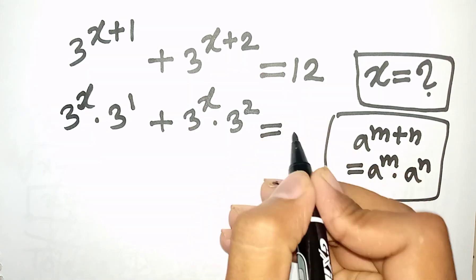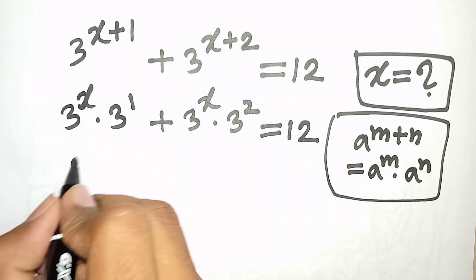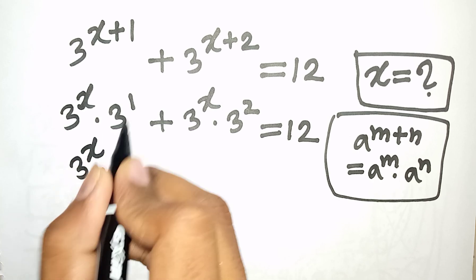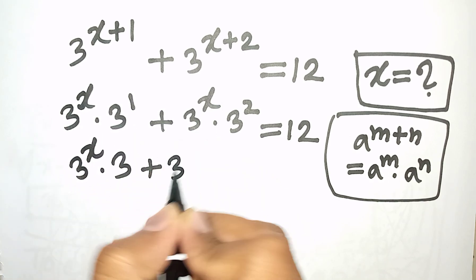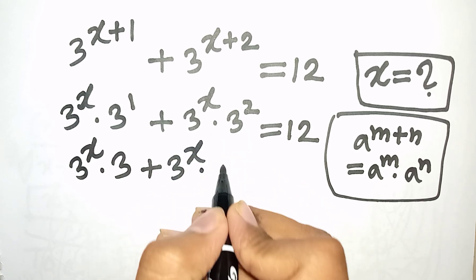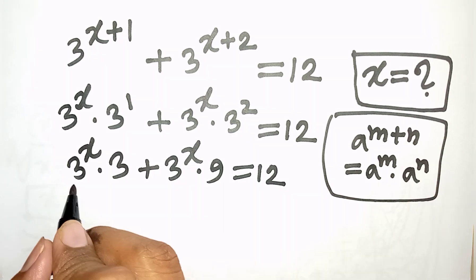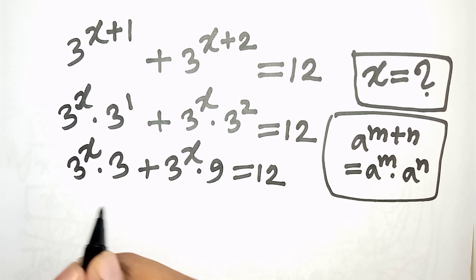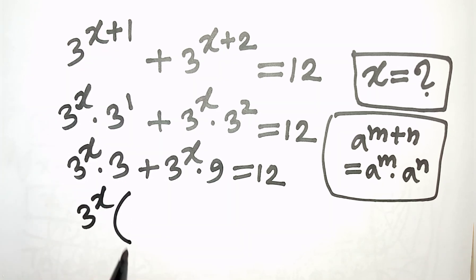So this equals 12. We can write 3 power x times 3 power 1 — that means 3 — plus 3 power x times 3 squared — that means 9 — equals 12. We see 3 power x appears in both terms, so 3 power x is common and can be factored out of the bracket.